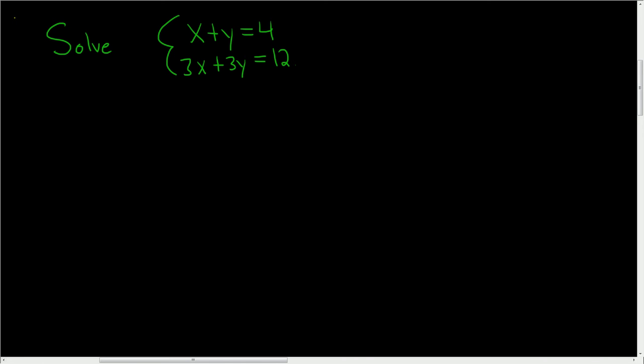We're being asked to solve the system of equations. Let's use the elimination method because if we multiply the first equation by negative 3, we'll get negative 3x here, and when we add it to the second equation, the x's will go away.